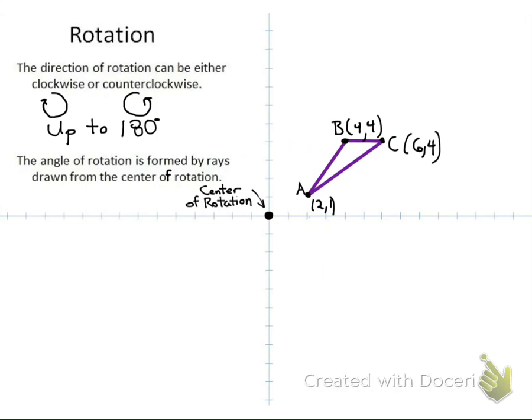Our last one is a rotation. A rotation can either be clockwise or counterclockwise, and we typically go up to 90 degrees or 180 degrees. If we go any more than that, we can just talk about going the opposite direction. The angle of rotation is formed by the rays drawn to the center of rotation. Typically, we're going to have the center of rotation be the origin. I look at my three points — A, B, and C. For point A, to go 90 degrees, I would draw two rays that give me a 90-degree angle.